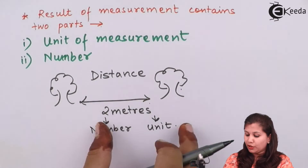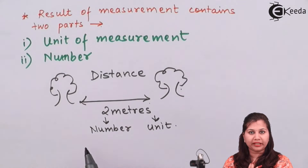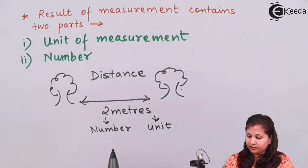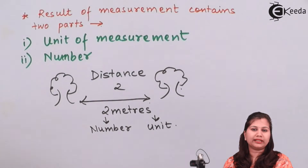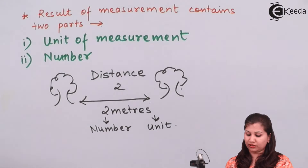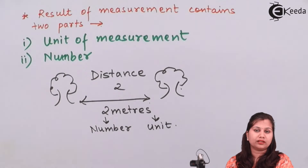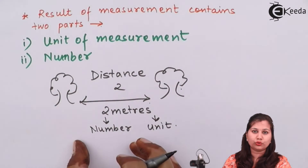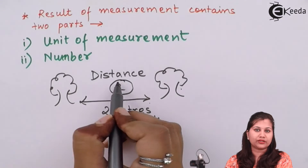The result of this measurement has two parts: the number 'two' gives a numerical value, and the unit gives meaning to that number. If we simply write that the distance is 'two' without a unit, it has no specification or value. So the unit must always be given with the result, because without the unit the numerical value is of no use.